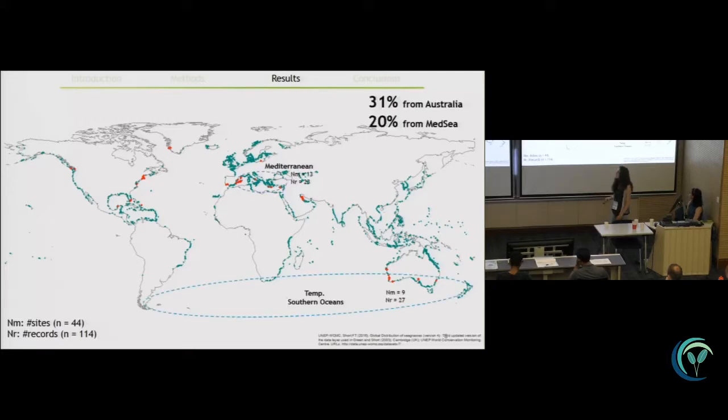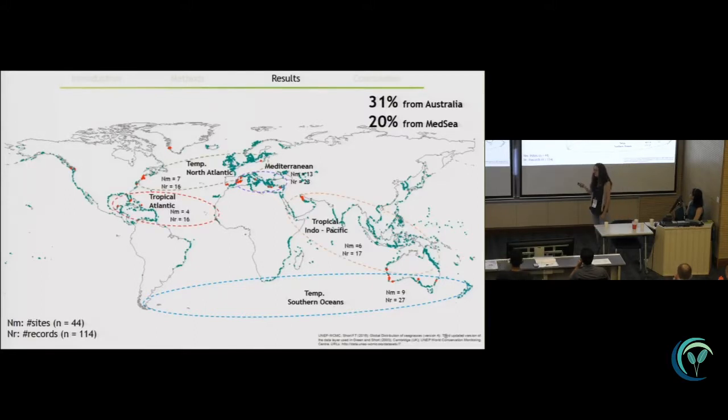Most of the sites though came from Australian seagrass meadows and the Mediterranean and then followed by seagrass meadows of the temperate North Atlantic and Tropical Atlantic and also some regions in the tropical Pacific. Then we had really few sites for the temperate North Pacific and the Arctic region. But in contrast we couldn't find any estimate in the coast of Brazil, South Africa, New Zealand or the West Pacific.